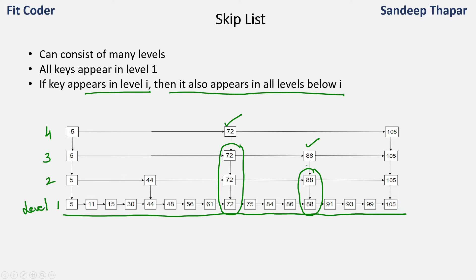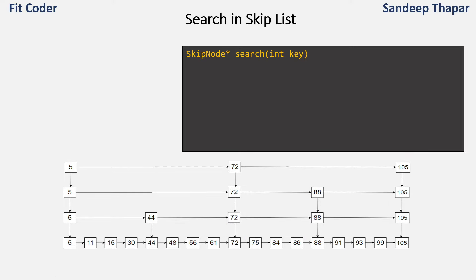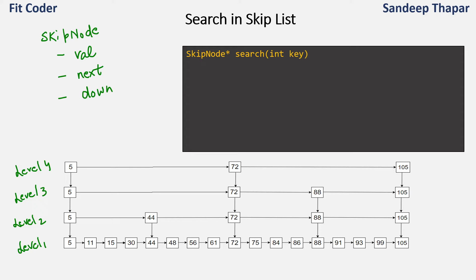Now let's look at the search algorithm in skip list. A node in the skip list — let's call it a skip node — contains three values: the value stored in the node (which can be an integer, character, or any object), the next pointer pointing to the next node in the linked list, and the down pointer for express lanes pointing to the level downwards. So a skip node consists of these three elements.